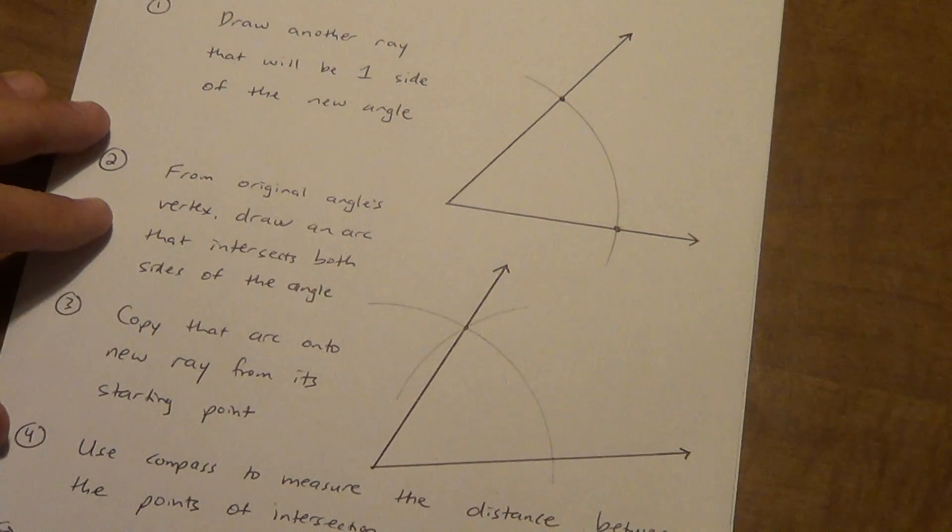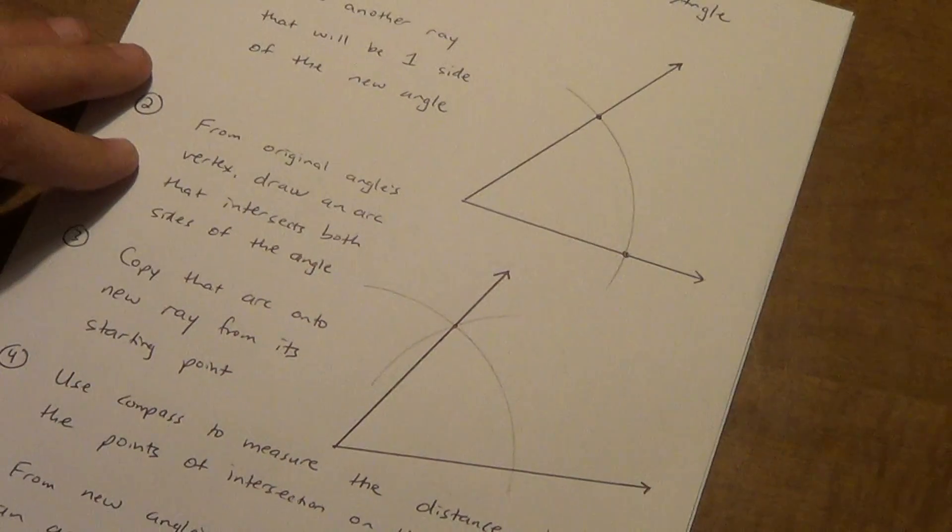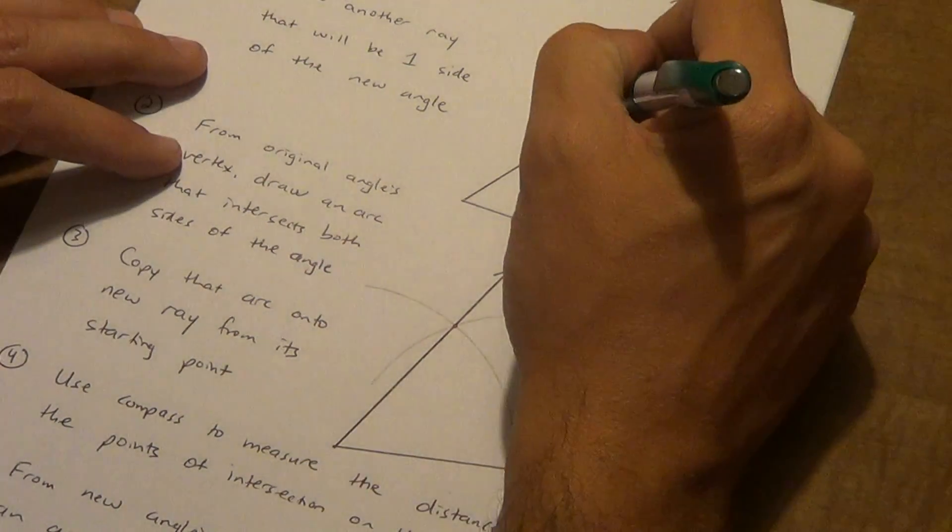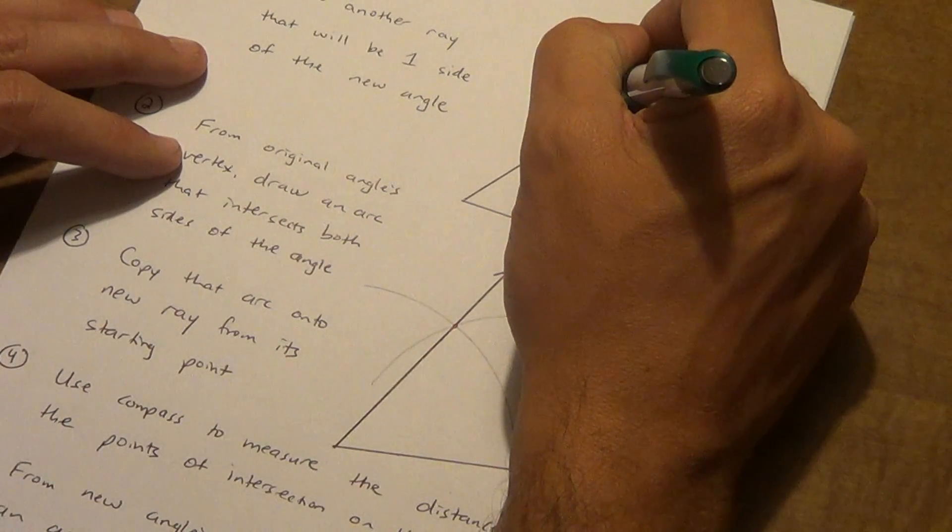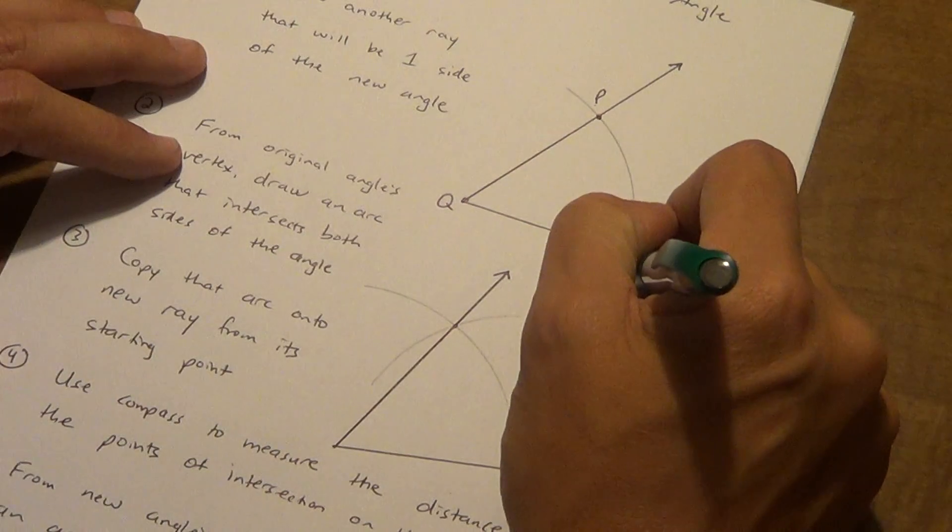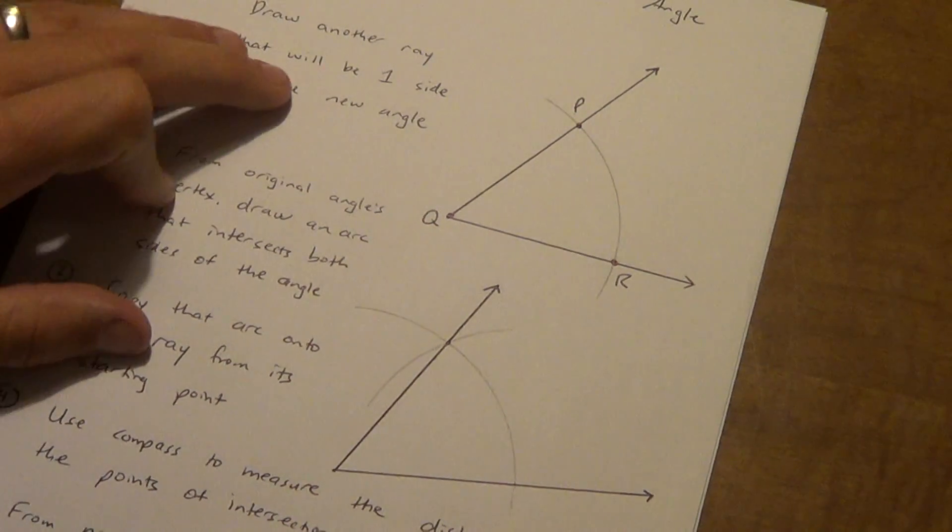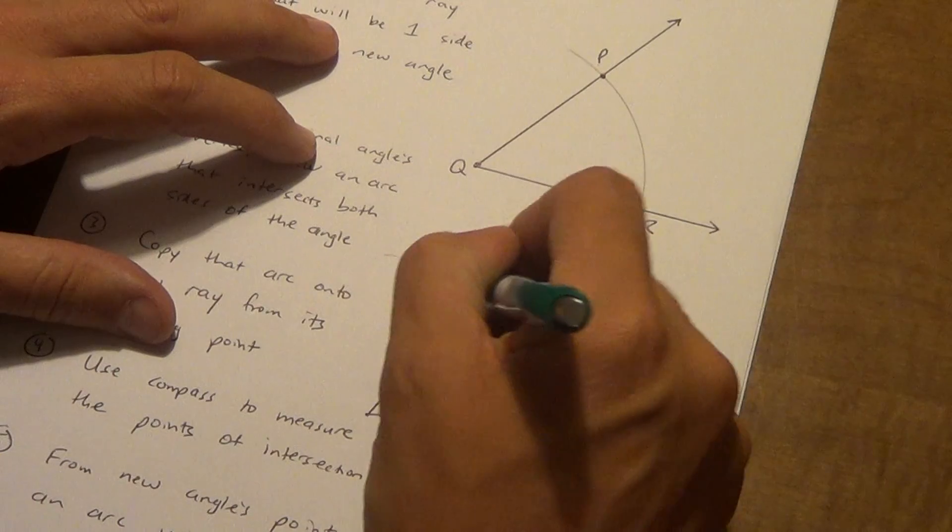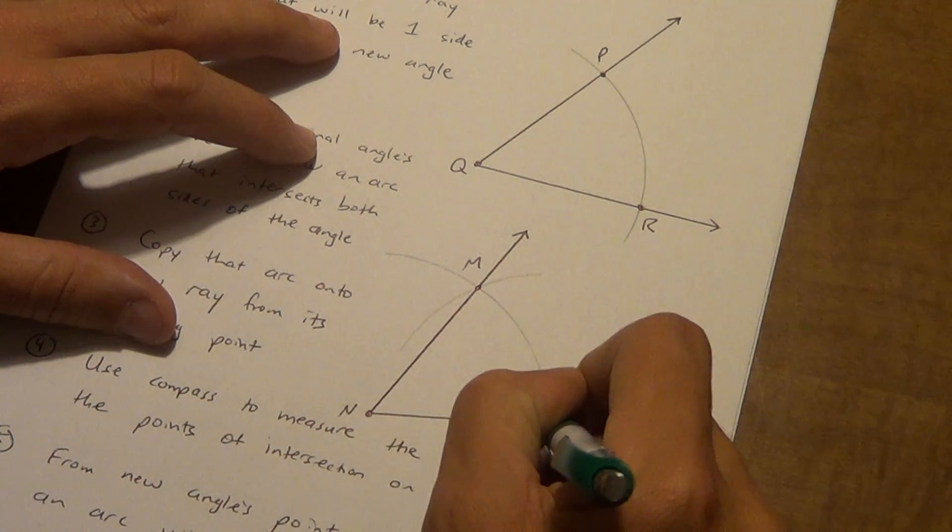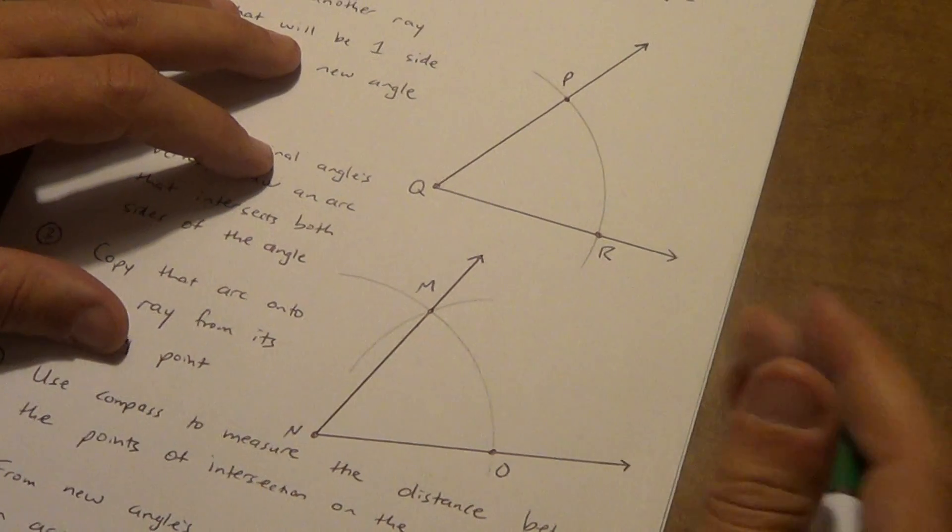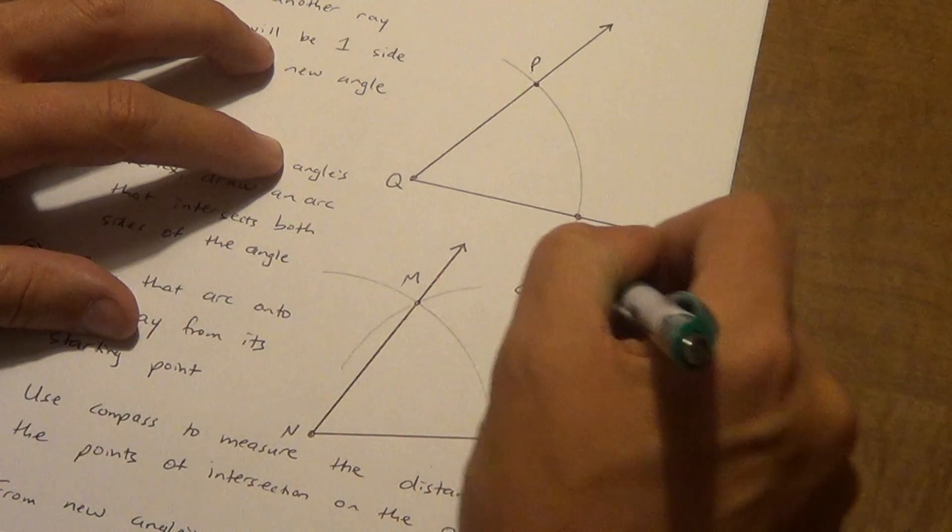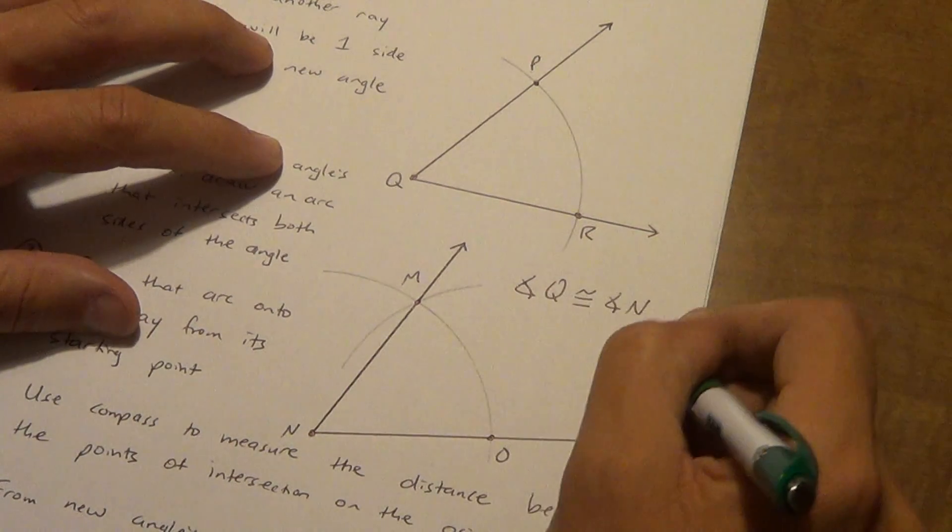They're not pointing in the same direction, but they don't have to. But they should be congruent. If I were to measure them, they should have the same degrees. So let's get some letters here. How about P, Q, R down here. And M, N, O down here. If I copied that correctly, I should be able to say that angle Q is congruent to angle N.